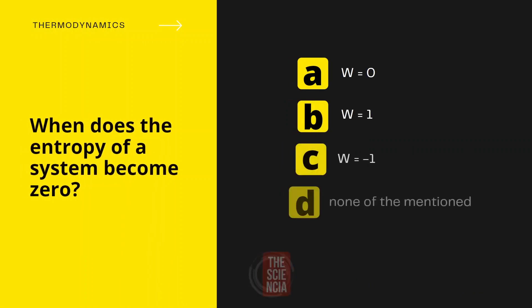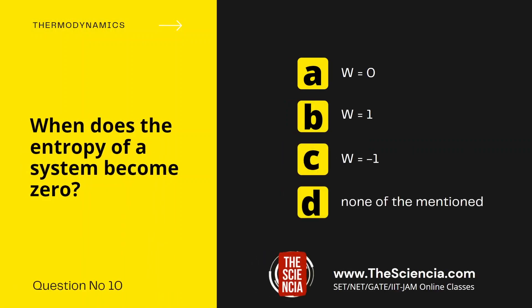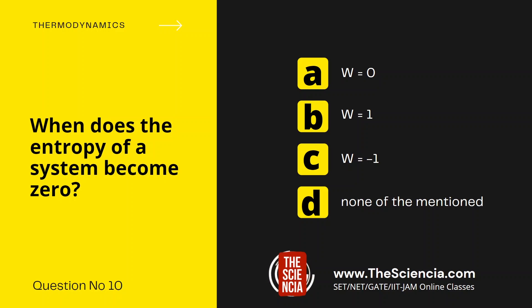Now, next question is question number 10. When does the entropy of a system become zero? Option A, W equal to zero. Option B, W equal to one. Option C, W equal to minus one. Option D, none of the mentioned. Where W is the thermodynamic probability.